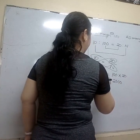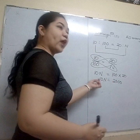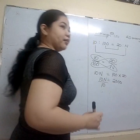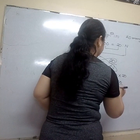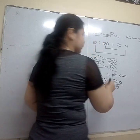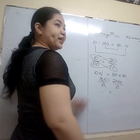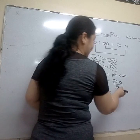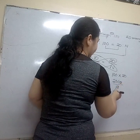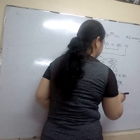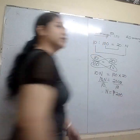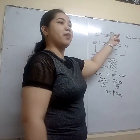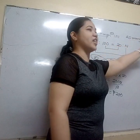Okay, so 10N, and then we're going to isolate N. So we divide by 10. 10 divided by 10 is 1. 2,000 divided by 10 is 200. So for every 10 oranges there are 20 oranges, giving 200.